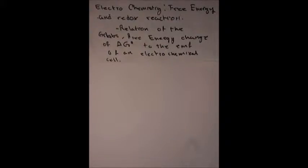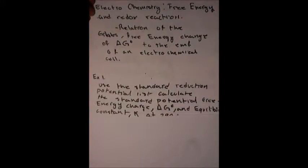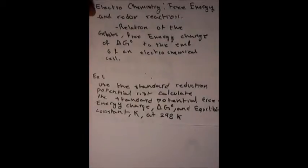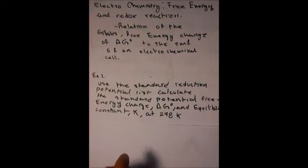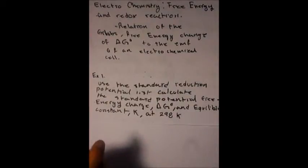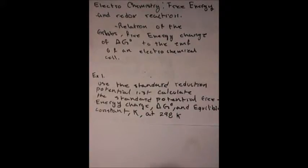This involves oxidation numbers and charge. The results of a method where we can find where the energy is going from a chemical reaction. Today we're going over a pretty simple problem. Example number one: Use the standard reduction potential list in the calculator and calculate the standard potential free energy change. Find Delta G and the equilibrium constant K at 298 Kelvin.